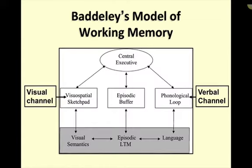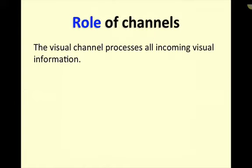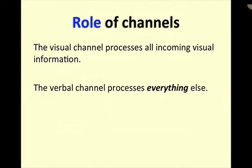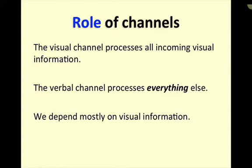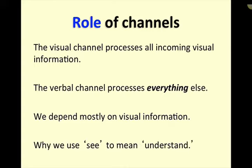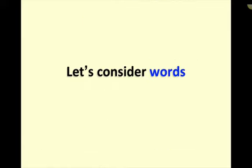Let me introduce Baddeley's model of working memory. I want to draw your attention to the fact that we have a visual channel for processing information and a verbal channel for processing information — two channels. The visual channel processes all incoming visual information; the verbal channel processes everything else. We have one entire channel dedicated to visual information. We depend really heavily on visual information to understand the world around us. That's why we use 'see' to mean understand. Now that we've talked about these channels, let's talk about words, because we use them a lot when we try to communicate.